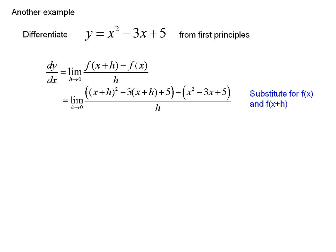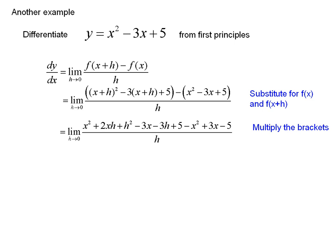x squared becomes x plus h squared. 3x becomes 3 times x plus h. Multiply out the brackets — these brackets here, and these brackets here. There's the answer. Notice the minus signs: minus 3 times x, minus 3 times h. Notice the minus signs here as well.